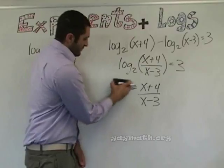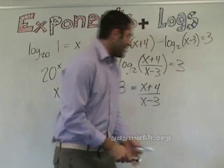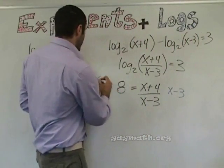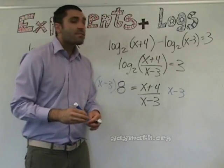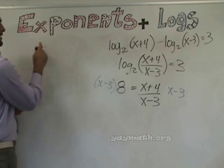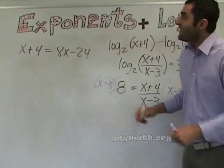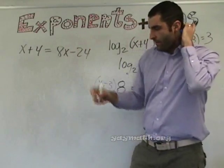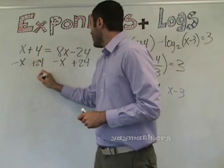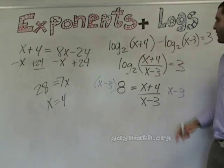Two to the third is eight, and then you can cross multiply or multiply both sides by x minus three. So eight times x minus three equals x plus four. Solving for x now: eight x minus twenty-four equals x plus four. Going with minus x and plus twenty-four, we'll have 7x equals 28 — oh that's always beautiful when that happens. x equals four, and we can check that it works.